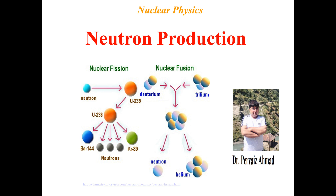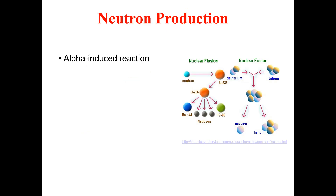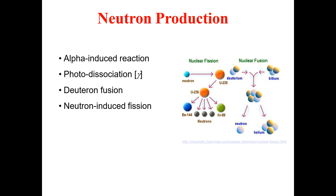Welcome to nuclear physics lecture. I am Dr. Parvaz Ahmed. In this lecture, we will discuss neutron production. There are many techniques and reactions by which we can get neutrons. All these reactions are classified as alpha-induced reactions, photodisintegration reactions, deuteron fusions, neutron-induced fission, beta-delayed neutron emissions, and spallation. Let's discuss each type of reaction in detail.